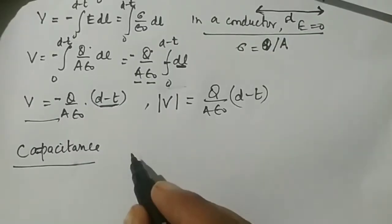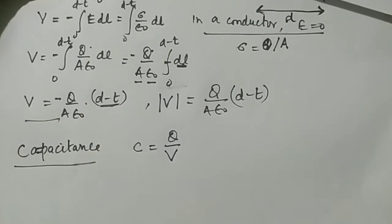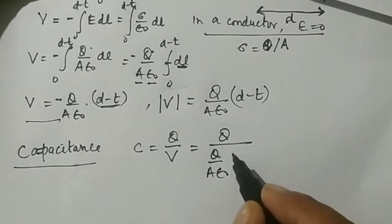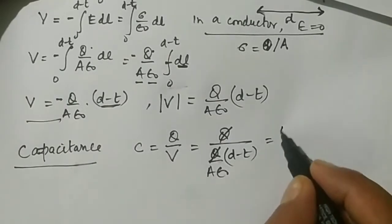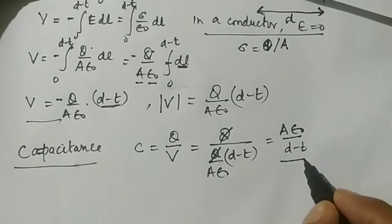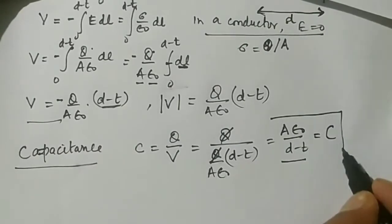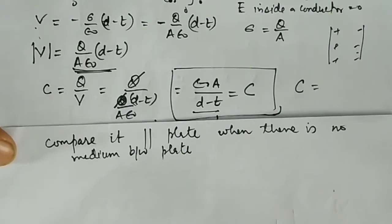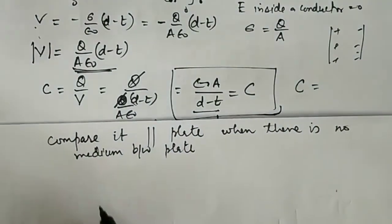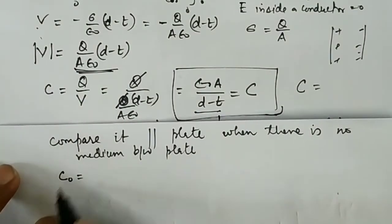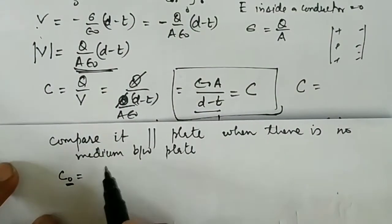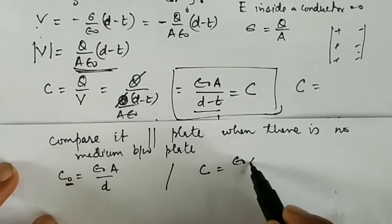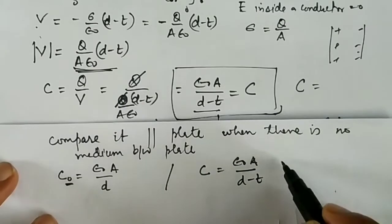Now we calculate the capacitance: C = Q/V = Q divided by Q(D - t)/(Aε₀), so Q cancels out and we get C = ε₀A / (D - t). Comparing with the standard parallel plate capacitor with nothing between the plates, C₀ = ε₀A/D, we see that since D - t is less than D, the capacitance C with the conducting slab is greater than C₀. So the capacitance is enhanced.